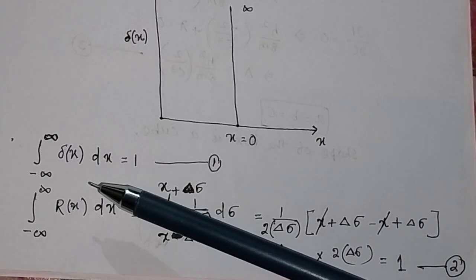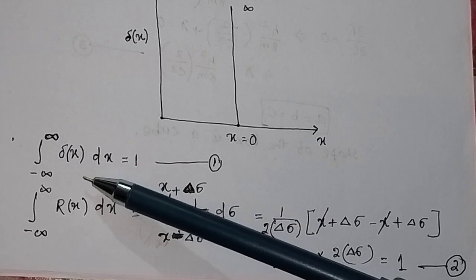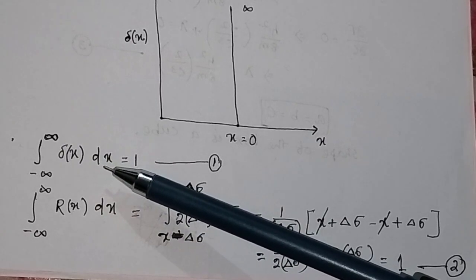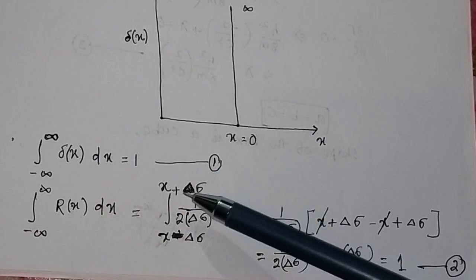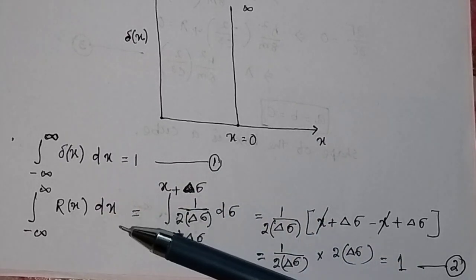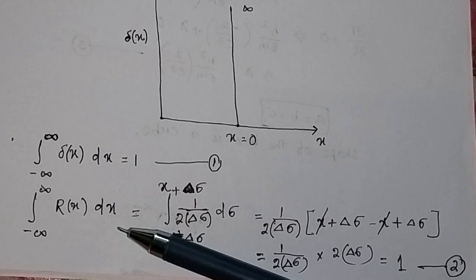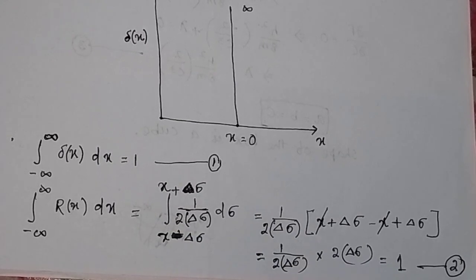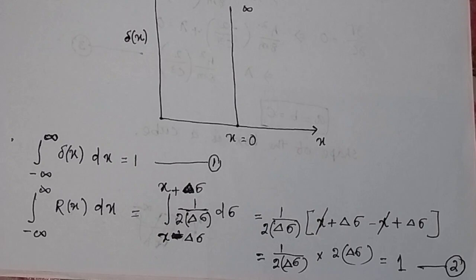That means the identity from the Dirac delta function — the integral from minus infinity to plus infinity of delta(x) dx equals 1 — can be proven in the case of the rectangular function as well. So the Dirac delta function is indeed a limit of the rectangular function. Thank you.